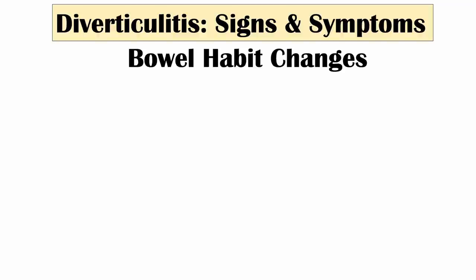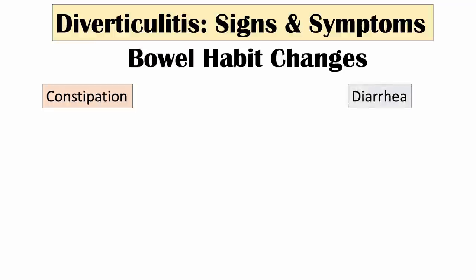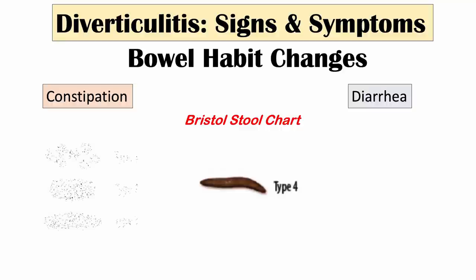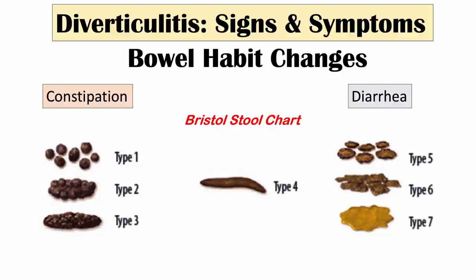The next symptom is bowel habit changes. These can be either constipation and/or diarrhea. Using the Bristol stool chart, type 4 stool is normal; types 1 to 3 represent constipation; and types 5 to 7 represent diarrhea. With diverticulitis, you can see constipation — types 1 to 3 — or diarrhea — types 5 to 7. Constipation is more common than diarrhea, but you can have both and it can alternate.